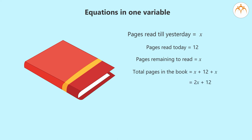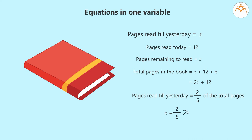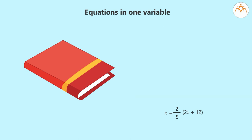The pages I had read till yesterday are two-fifths of the total pages. When we use this we get the equation X equals 2/5 into 2X plus 12. To solve this, let us multiply both sides by 5, so we get 5X equals 2 into 2X plus 12.